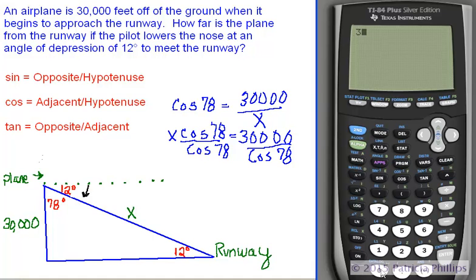And the cosine button is right smack dab in the middle of your calculator between sine and tan. So, what we're going to do is we're going to put 30,000 divided by cosine 78. There's no need to put a degree sign here because we've already taken care of that in the other menu. Close the parentheses. Press enter.